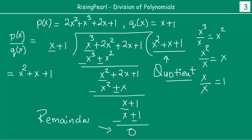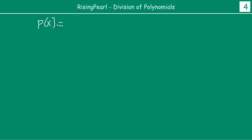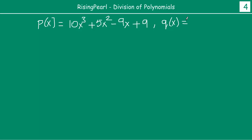Now friends, let's do this work. Let us take one more example and find out. So this time let's write P(x) as 10x cubed plus 5x squared minus 9x plus 9. Let's take this as our P(x) and then we divide by Q(x), which is another polynomial where Q(x) will be 2x plus 3. So let's divide and see what happens.